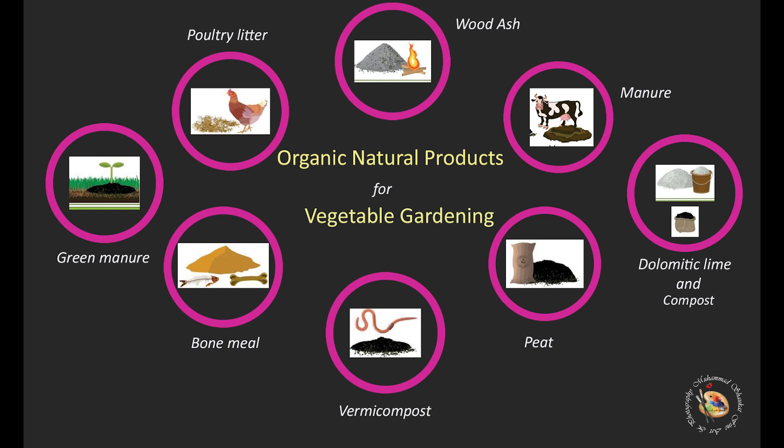In organic vegetable gardening, natural and organic fertilizers are preferred. These fertilizers provide essential nutrients to the plants while maintaining soil health and sustainability. Common organic fertilizers include compost, which is one of the best organic fertilizers and soil amendments, created by decomposing organic matter such as kitchen scraps, yard waste, and manure. Compost adds nutrients and improves soil structure, making it an excellent choice for vegetable gardens.